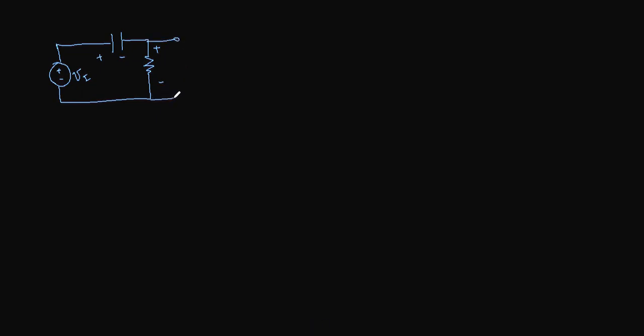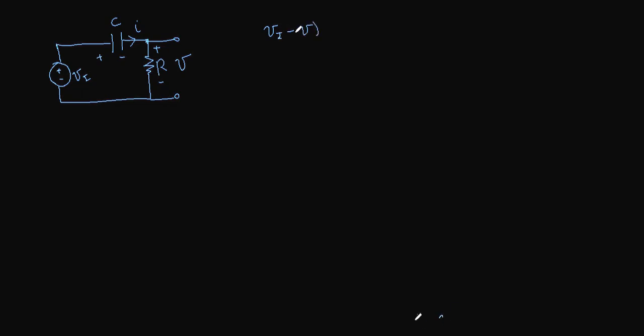Now let's do another circuit — the inverse. We have a voltage source, but now we put the capacitor first and a resistor after it. We're interested in the voltage across the resistor, which we call V. There's a capacitor C, a resistor R, and current I flowing. The current through the resistor equals the current through the capacitor: C times d(VI minus V)/dt equals V over R.